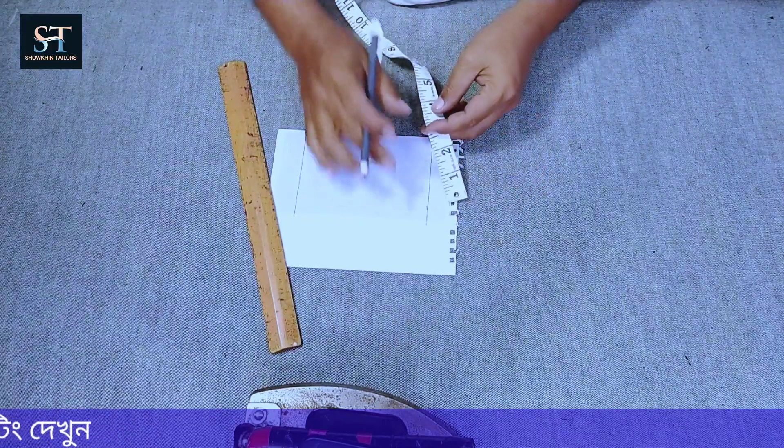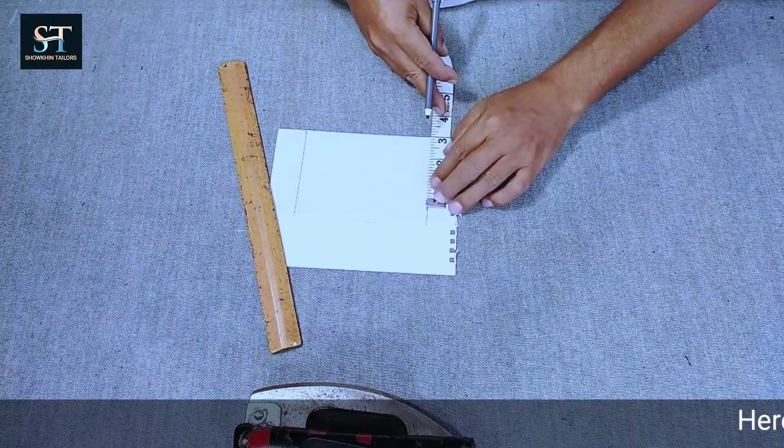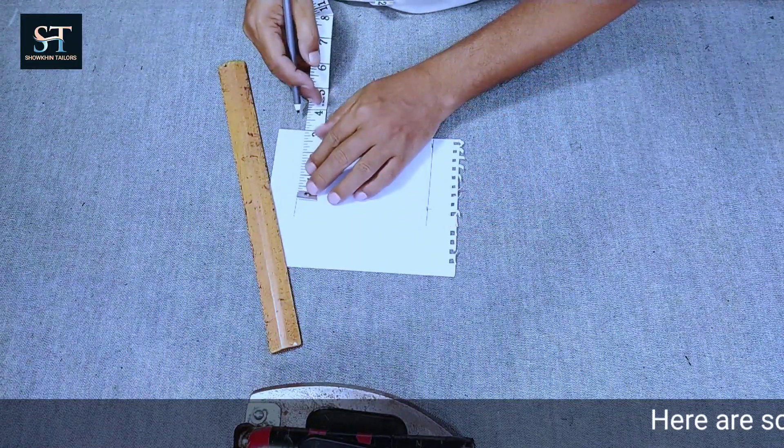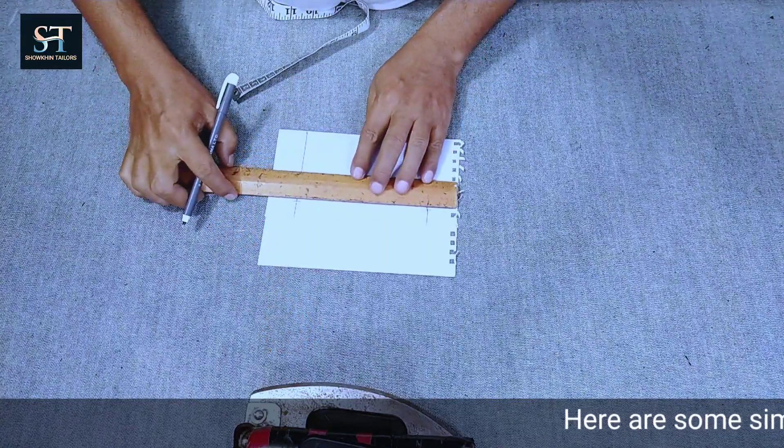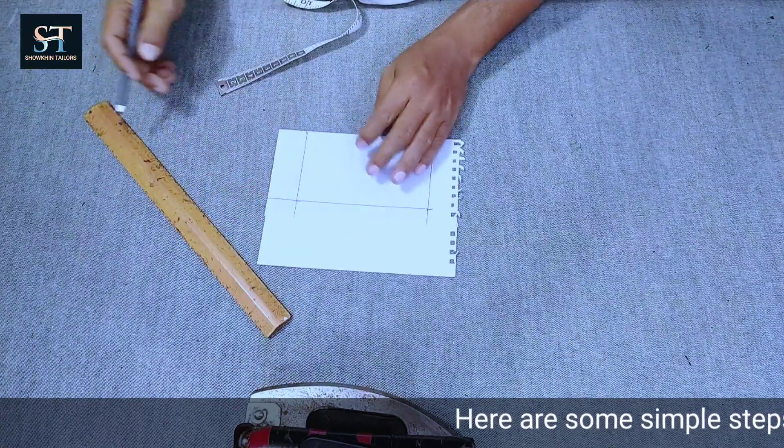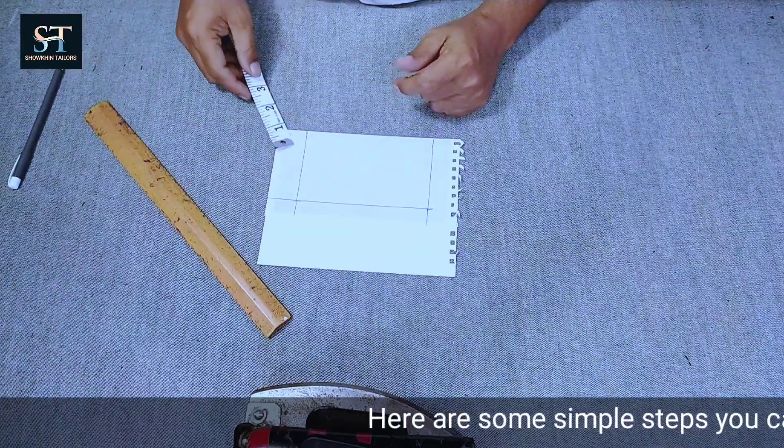Using the paper, mark three measurements here - three measurements down, and three measurements across. This is the most important thing to do.